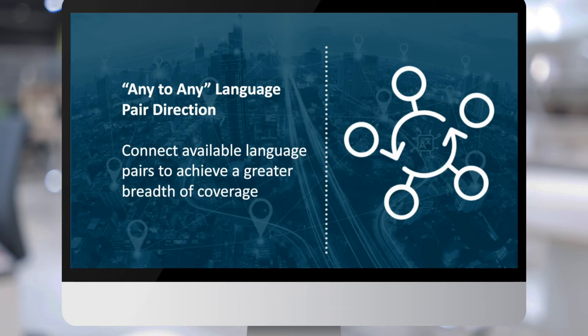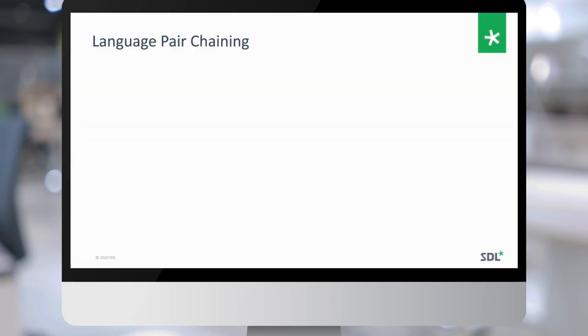This is not exactly a brand-new concept in the machine translation world, but now that we're in neural machine translation, we're seeing that this feature brings value by giving greater breadth of coverage without sacrificing quality as it had in legacy systems. The quality degradation with neural MT does not compound the way that phrase-based statistical MT did. For languages where there is little data to build a direct language pair model, we have observed that the language pair chaining approach actually provides better translation than the direct pair.